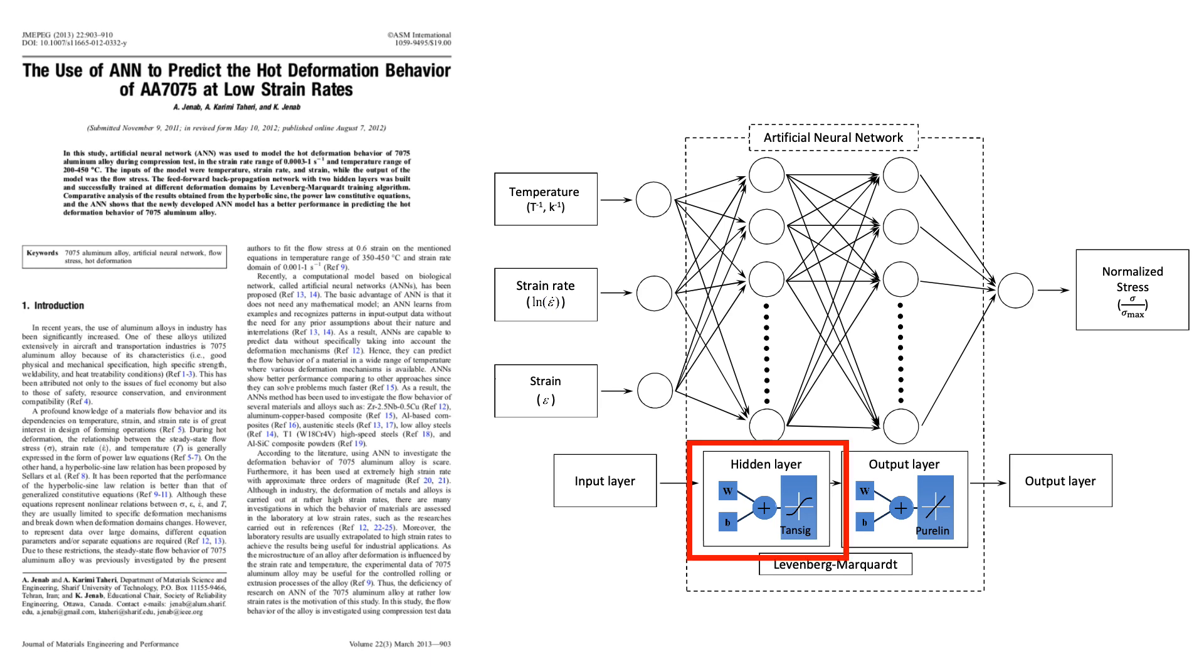Also, I wanted to have one hidden layer, which was a tansig layer, and the other one was the output layer, which was purelin or pure linear output layer.